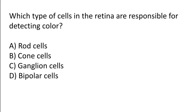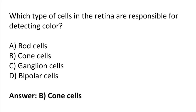Which type of cells in the retina are responsible for detecting color? Rod cells, cone cells, ganglion cells, or bipolar cells. The correct answer is option B — cone cells in the retina are responsible for detecting color.